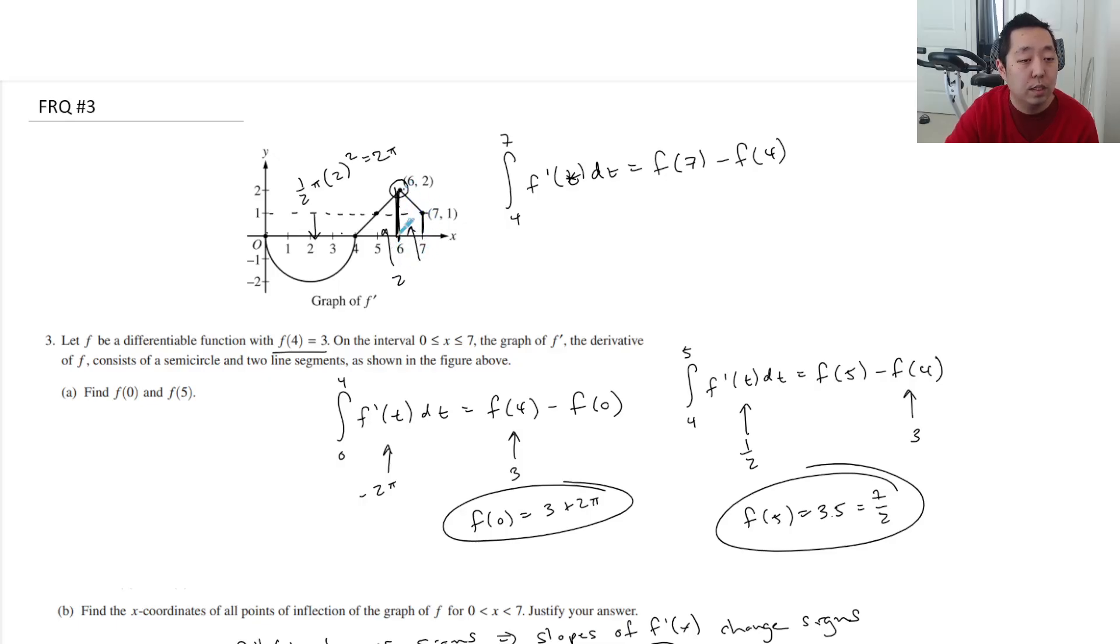So this is 2 plus 3 halves. It's 4 halves plus 3 halves. It's 7 halves. This is 3. So f of 7 is equal to 3 plus 7 halves. It's 6 halves. No, 6 halves plus 7 halves.